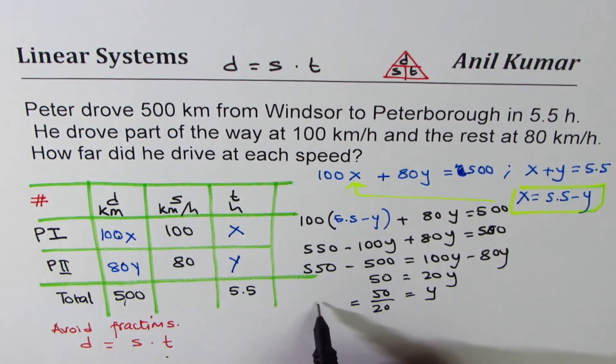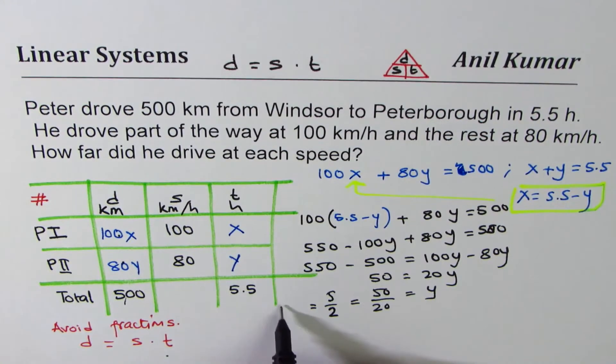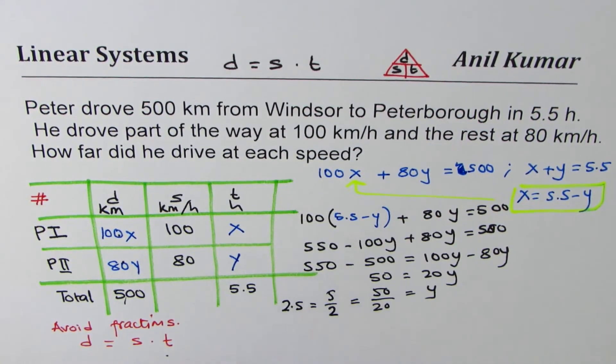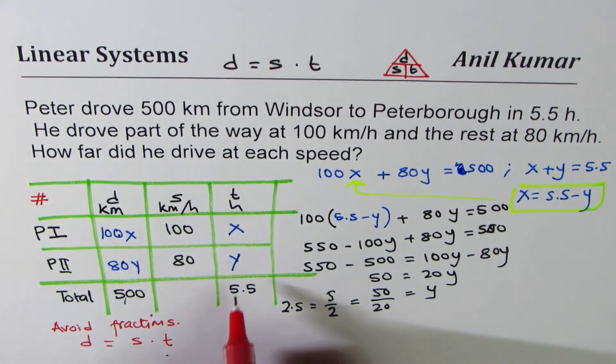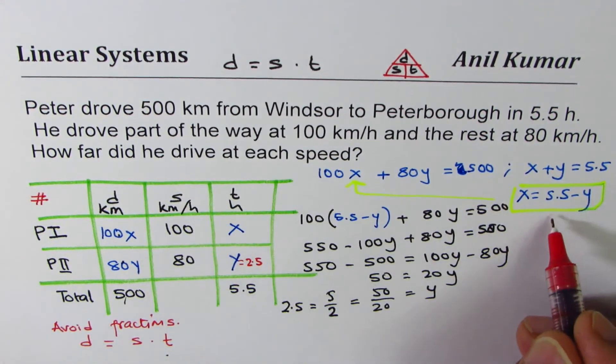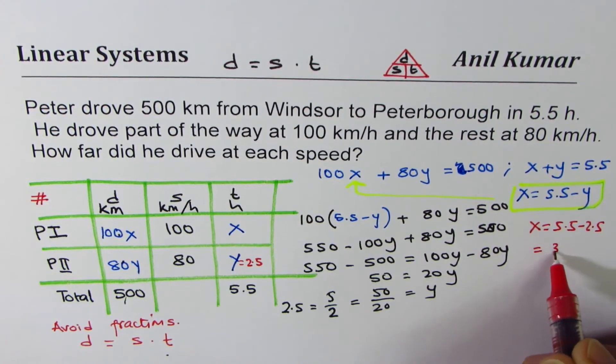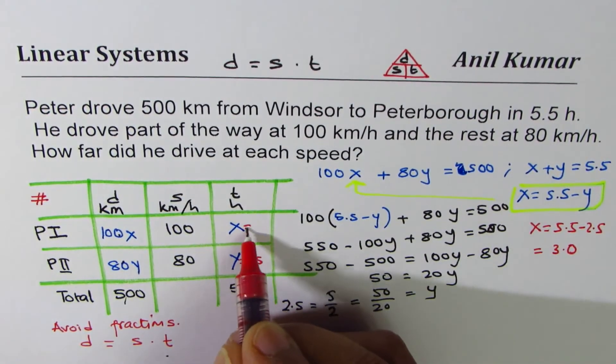We get 5 over 2, which in decimals could be written as 2.5. So we get y as 2.5. We can find x now: x equals 5.5 minus 2.5, which is 3.0.